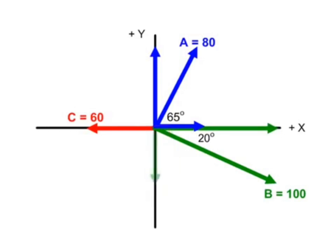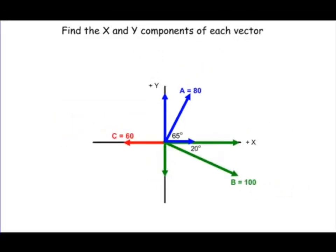Notice that there is no y component of vector c. Vector c lies entirely on the negative x axis, so that is the value we'll be using when it comes time to use it.